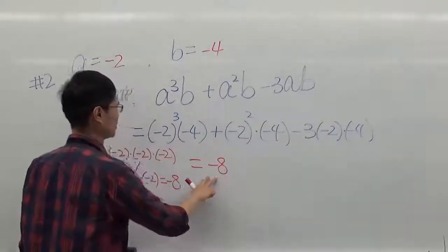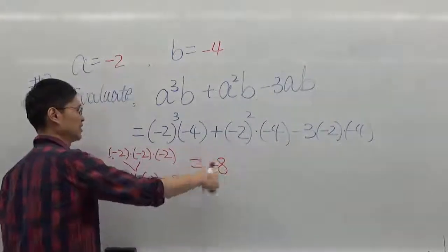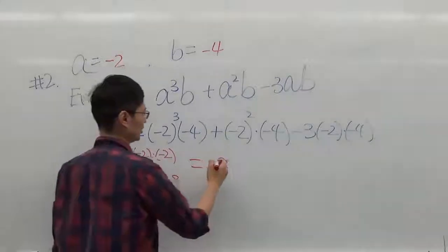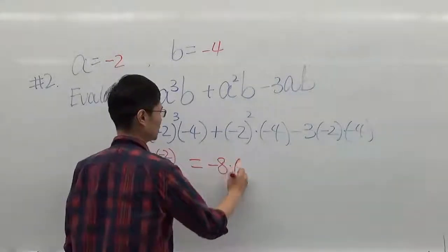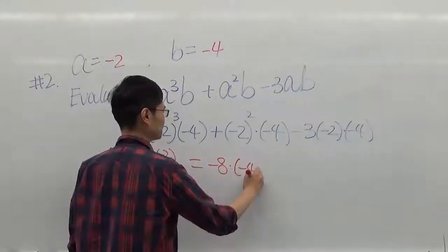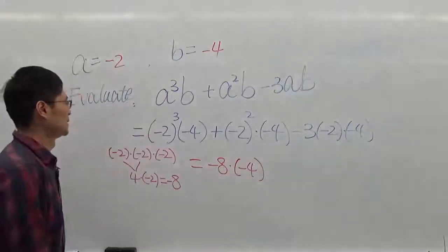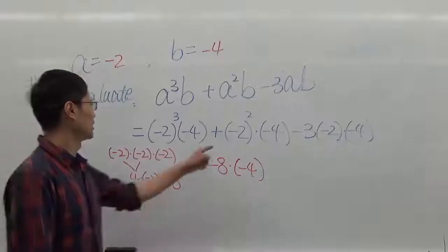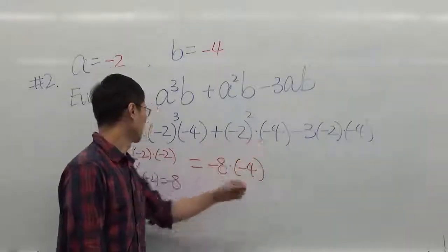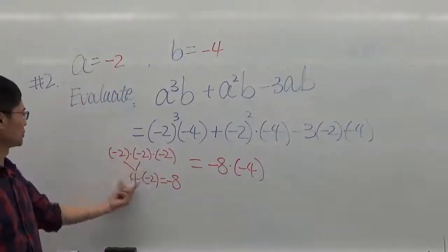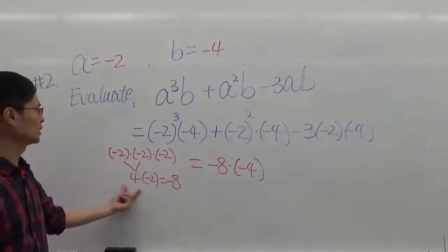So we're going to have negative 8 times negative 4. Next, negative 2 squared: we have negative 2 squared right here, which is positive 4.